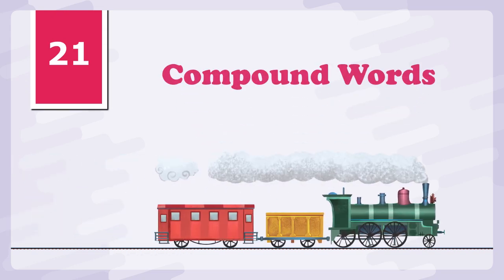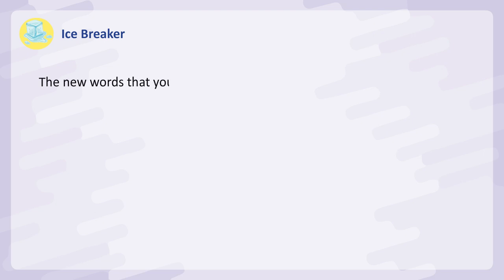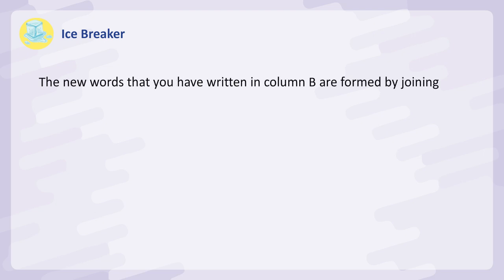Lesson 21: Compound Words. Icebreaker — the new words that you have written in column B are formed by joining two words in column A.